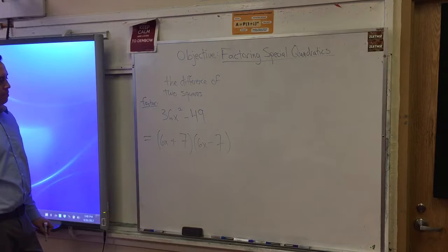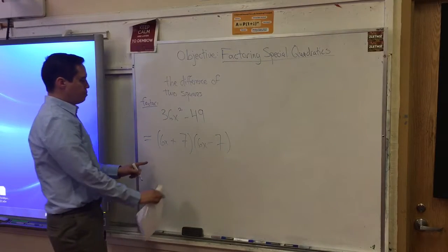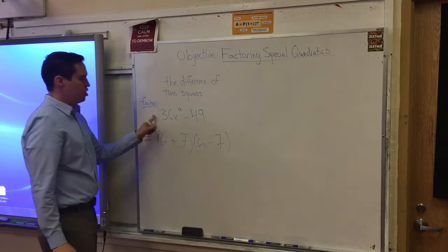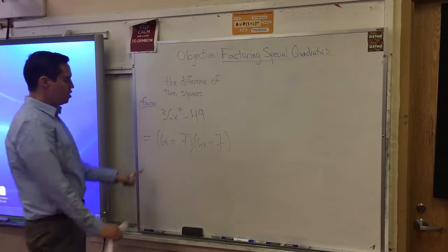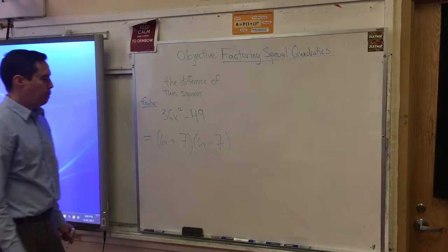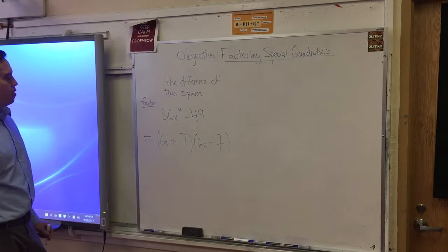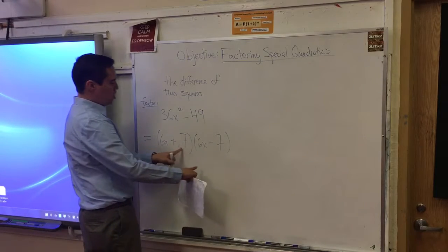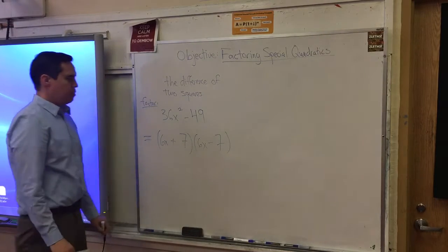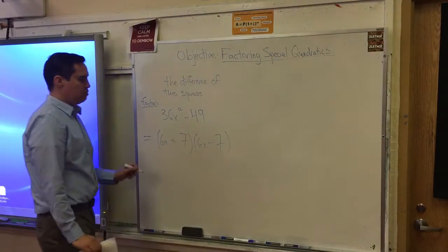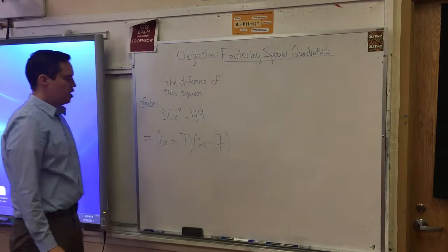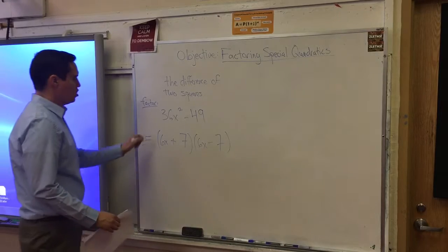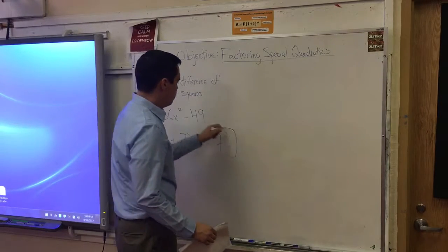So how would I know that? 6 squared, 6x times 6x, 36x squared. 6x times negative 7 will give us negative 42x. 7 times 6x, positive 42x. They sum to 0. And the last one, 7 times negative 7 gives us negative 49. So it works. This is the correct answer factored.